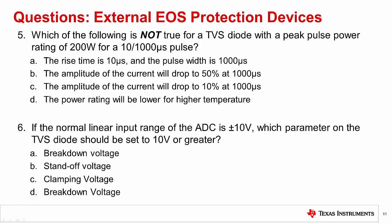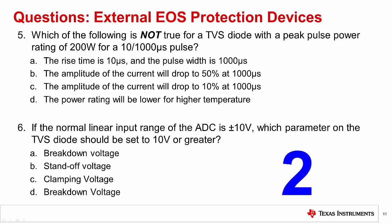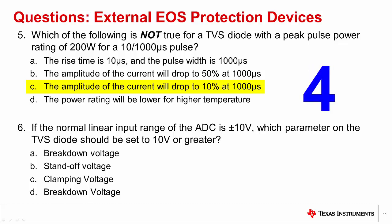Question five: which of the following is not true for a TVS diode with a peak pulse power rating of 200 watts for a 10 by 1,000 microsecond pulse? The correct answer is C — the end of the pulse is defined where the current drops by 50%, not 10%. Question six: if the normal linear input range of the ADC is ±10 volts, which parameter on the TVS diode should be set to 10 volts or greater? The correct answer is B, standoff voltage. The TVS diode is meant to be operated with the reverse standoff voltage applied, and the leakage is defined for this voltage. The diode will break down at voltages higher than the standoff voltage.